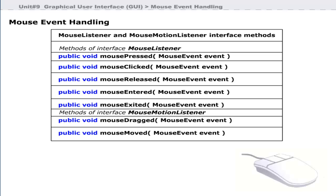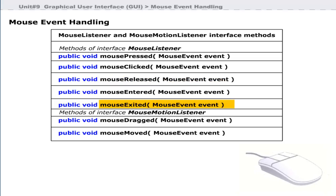Mouse event handling methods are defined in the MouseListener and MouseMotionListener interfaces. Key methods include mousePressed, mouseClicked, mouseReleased, and mouseExited. mousePressed is called when a mouse button is pressed on a graphic component. mouseClicked is called when the mouse button is pressed and released without moving the mouse cursor.